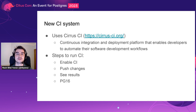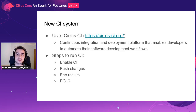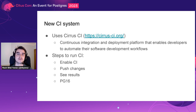Now let's talk about this new CI system. This CI system uses Cirrus CI to build and test your changes. Cirrus CI is a continuous integration and deployment platform that enables developers to automate their software development workflows. There are a couple of steps to run this CI: first is how to enable CI, and the second is to push your changes, after which you will see the results on the Cirrus CI web page. One important point is that this new CI will be available from PG-16.